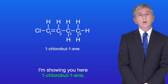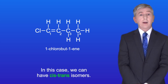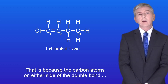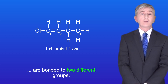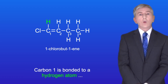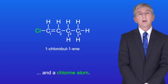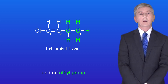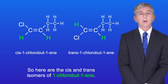Here is 1-chlorobut-1-ene. In this case we can have cis-trans isomers because the carbon atoms on either side of the double bond are bonded to two different groups. Carbon-1 is bonded to a hydrogen atom and a chlorine atom, and carbon-2 is bonded to a hydrogen atom and an ethyl group. So here are the cis and trans isomers of 1-chlorobut-1-ene.